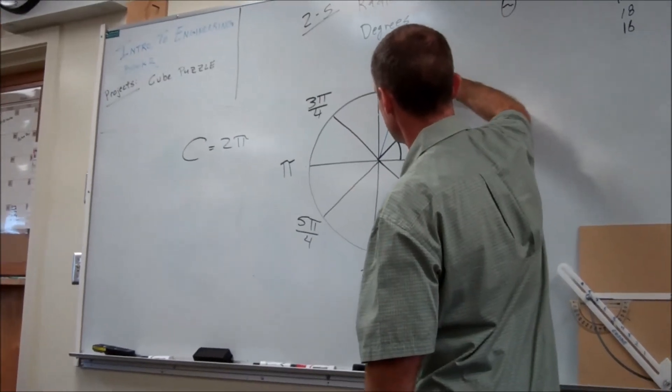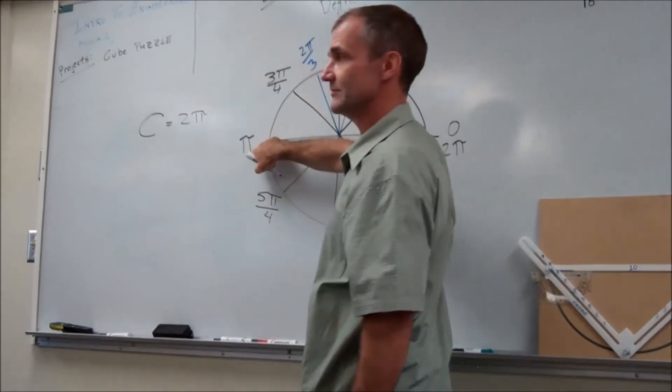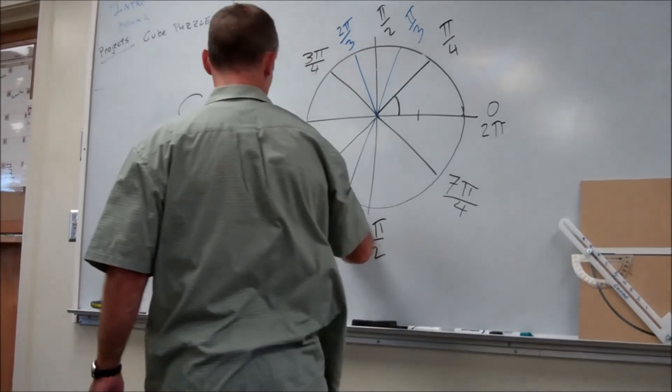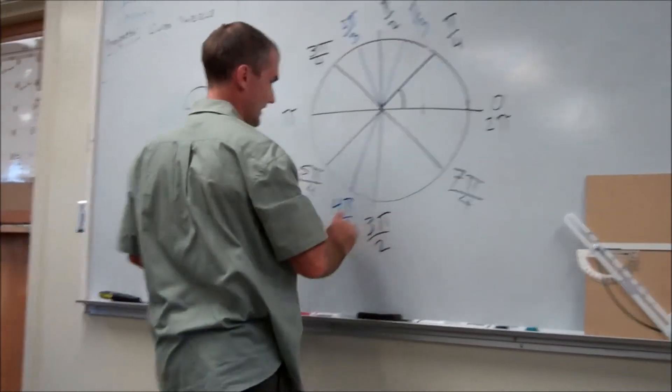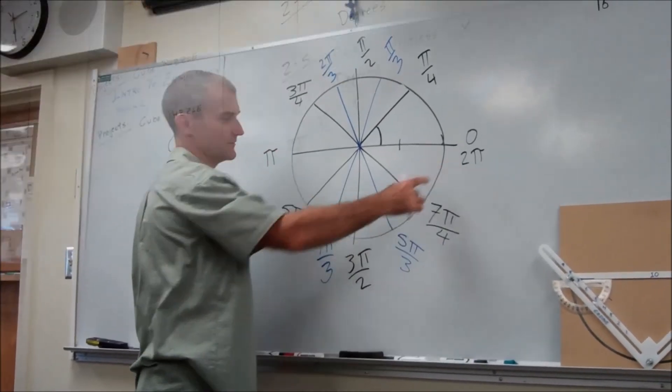So it's pi over 3, 2 pi over 3, 3 pi over 3, 4 pi over 3, 5 pi over 3, 6 pi over 3.